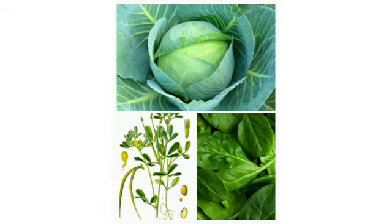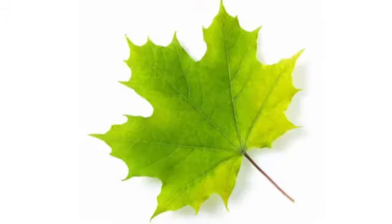Leaves of some plants such as cabbage, fenugreek, lettuce and spinach store food in them — just like roots and stem. Green leaves make food for the plant in the presence of air, water and sunlight.